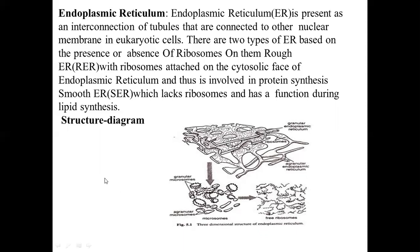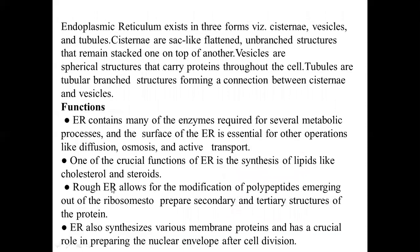Endoplasmic reticulum exists in three forms: cisternae, vesicles and tubules. Cisternae are sac-like, flattened, unbranched structures that remain stacked one on top of another. Vesicles are spherical structures that carry proteins throughout the cell. Tubules are tubular branched structures forming a connection between cisternae and vesicles.